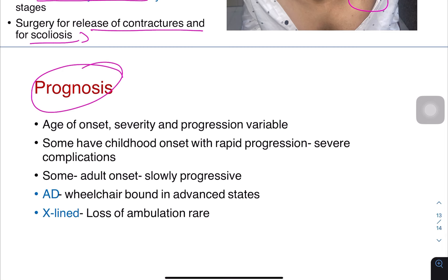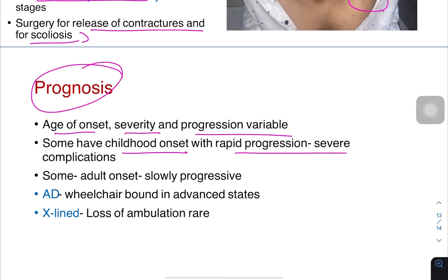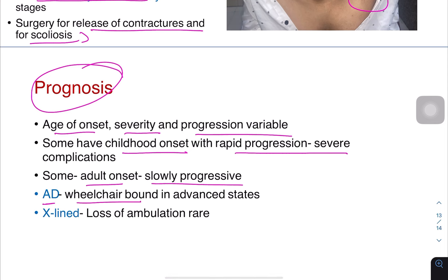Regarding prognosis, age of onset, severity, and progression are variable. Some have childhood onset with rapid progression, while some have adult onset with slow progression. Autosomal dominant cases can become wheelchair-bound in advanced stages. In X-linked cases, loss of ambulation is rare. Overall, prognosis is variable.